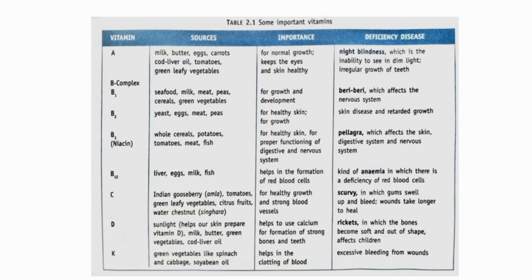Next is Vitamin B12. The sources are liver, eggs, milk, and fish. Its importance is that it helps in the formation of RBC — red blood cells. The deficiency disease is a kind of anemia in which there is a deficiency of red blood cells. Note that anemia can also happen due to deficiency of iron, which is a mineral. But if there is deficiency of Vitamin B12, a kind of anemia may also occur.